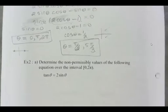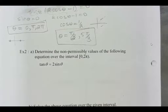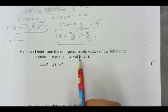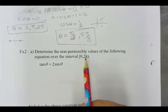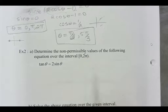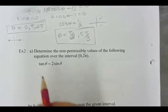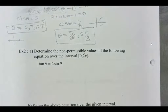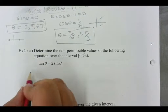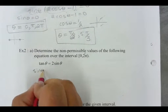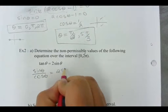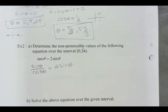Example two, it says determine the non-permissible values of the following equation over the interval zero, including zero, to 2 pi, but not including 2 pi. So what can I rewrite tan theta as? Just so that I'm working in terms of the same thing. Sine over cos. And that's equal to 2 sine theta.